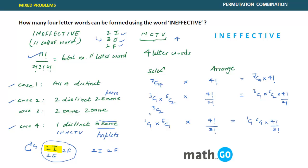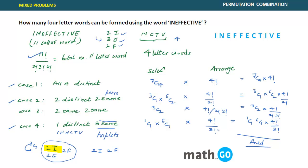From the three available pairs (two I's, two E's, two F's), you must choose two pairs, giving 3C2. The arrangement of four letters where two are of one kind and two of another is 4!/(2! × 2!). So the answer for case three is 3C2 × 4!/(2! × 2!). Adding all four cases gives the final answer.